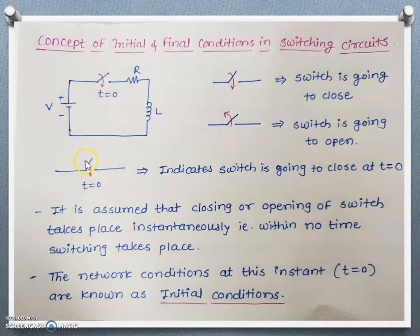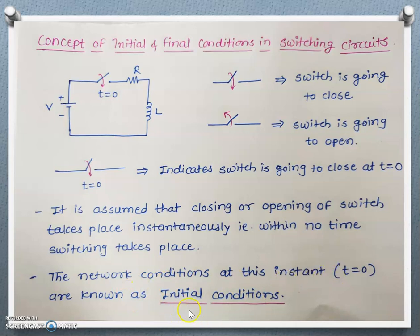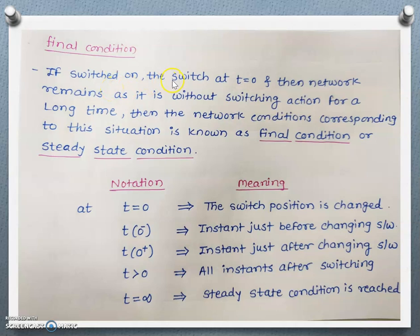The arrow in the downward direction with t=0 indicates that the switch is going to close at t=0. It is assumed that closing or opening of a switch takes place instantaneously. The network conditions at instant t=0 are known as initial conditions. If we switch on the circuit and the network remains as it is without switching action for a long time — say one hour, two hours, or one day — then the network condition corresponding to this situation is known as the final condition or steady state condition.